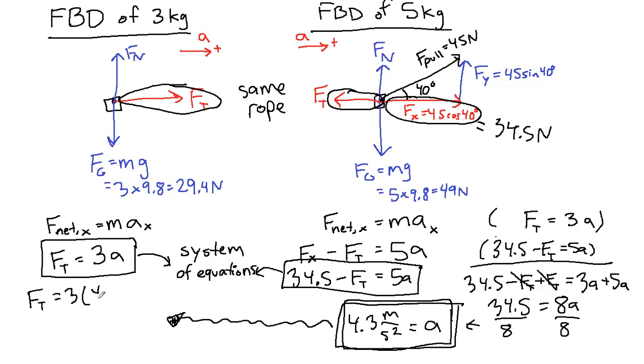So 3 times 4.3, we're going to get 12.9 newtons or 13 newtons. That's the tension in the rope. On both sides of the same rope is this total amount of tension.